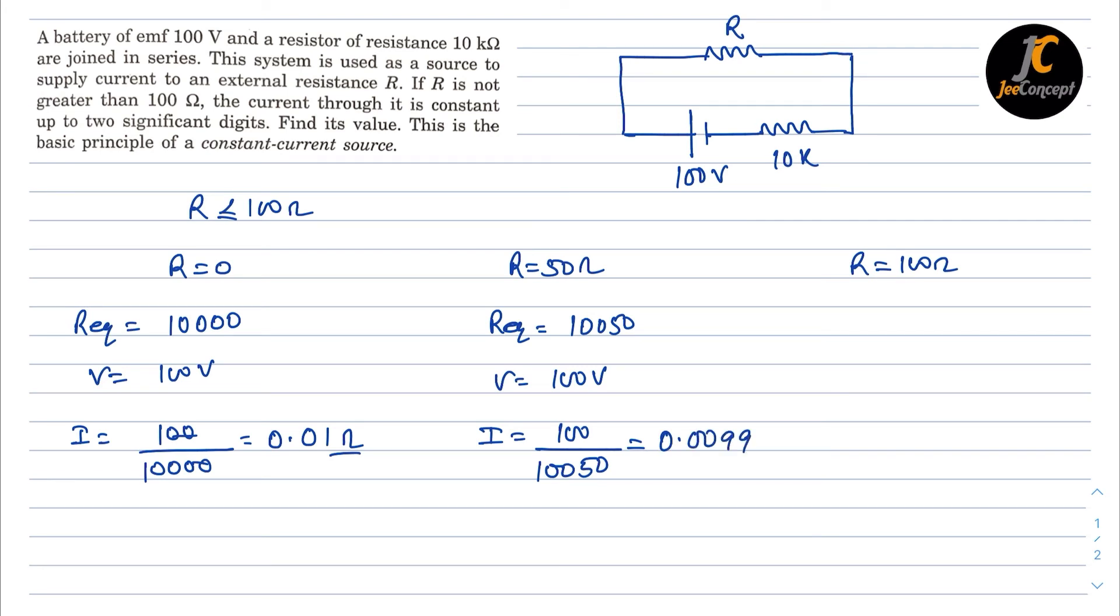And for the third part, R equivalent will become 10,100. V is again 100 volt. So the I will become 100 upon 10,100. So this time it is going to be 0.0099.